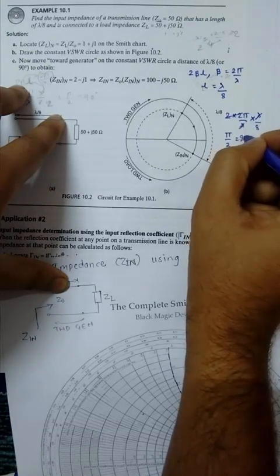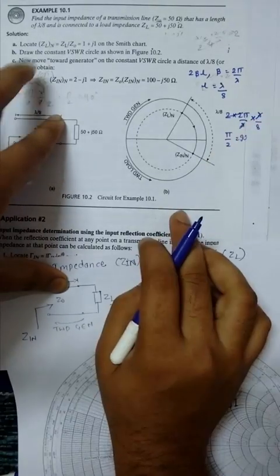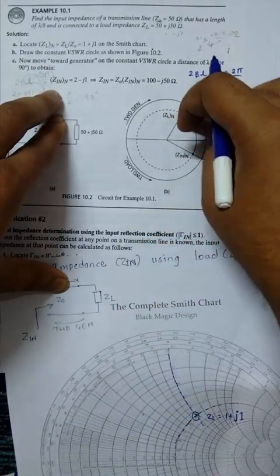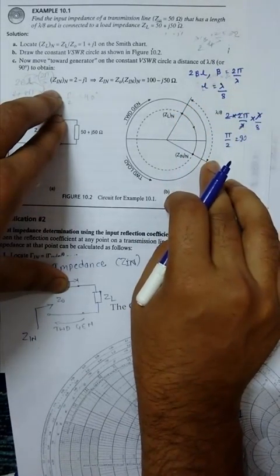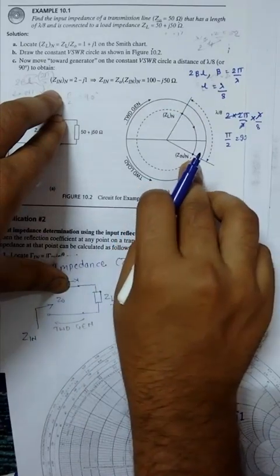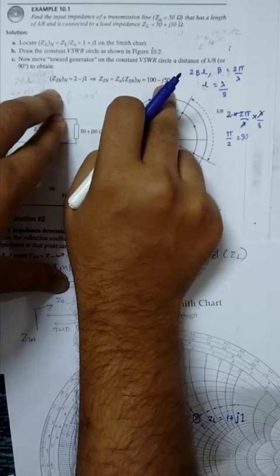In this way you got the angle. Now you have to plot ZL, then rotate it by lambda by 8, which gives you Zin normalized. After that, multiply with Z0 to get the result: 100 minus 50j.